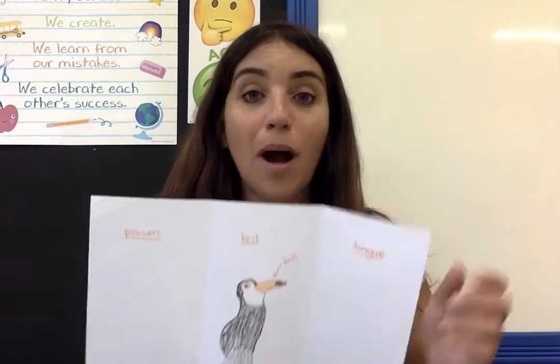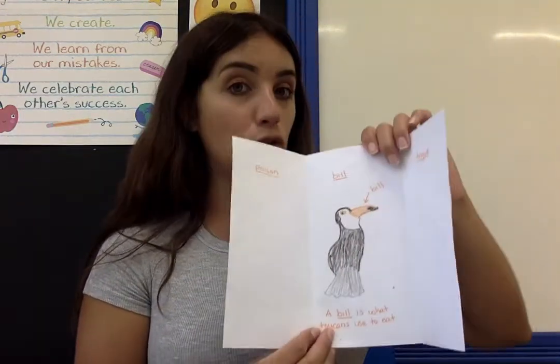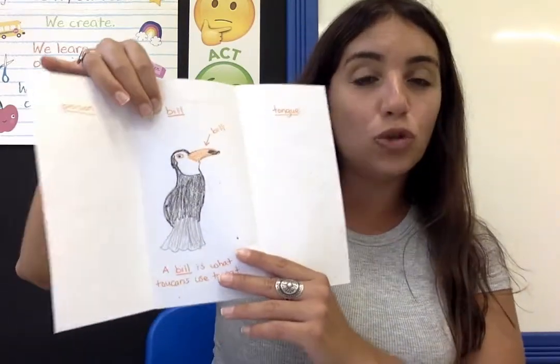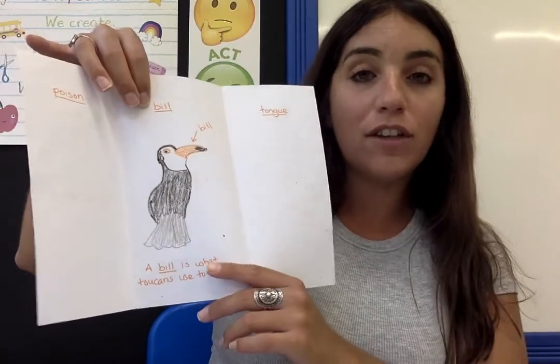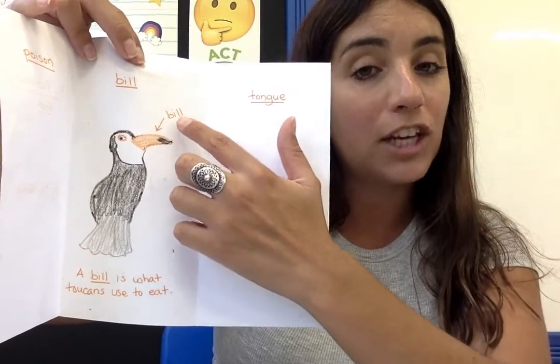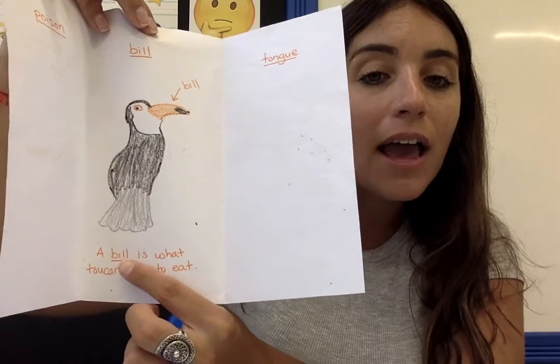This is my example — you will not copy my example, this is from a different book — but I want to show you what you need to do. I chose the word Bill; that was a difficult word for me. I wanted to draw this word and a picture of it in my Pictionary book. So I wrote the word Bill, I drew a picture, and I put a label in my picture to show what a bill is. Then I wrote my definition: a bill is what toucans use to eat.